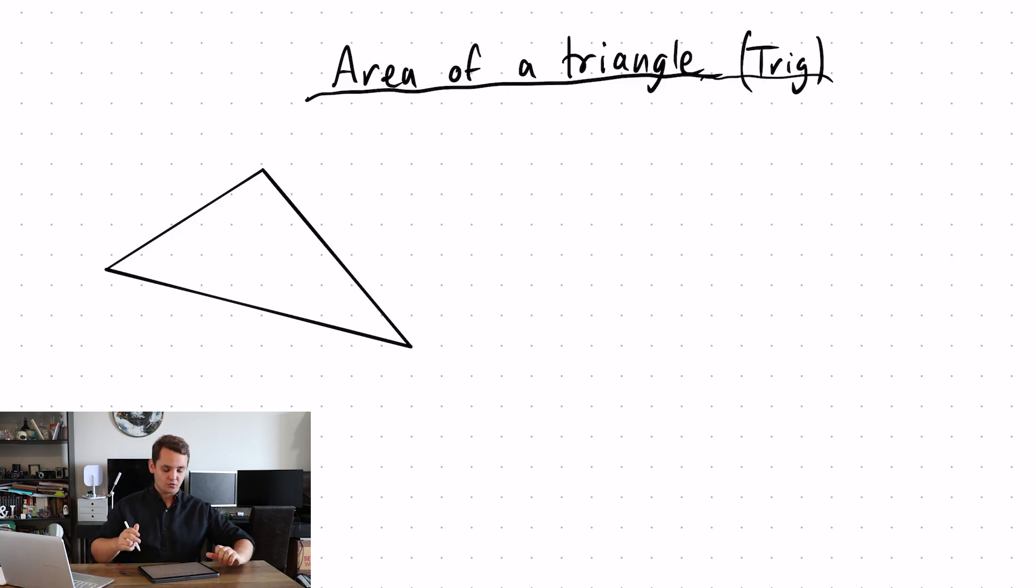So this revolves around knowing three pieces of information. We need to know two sides and we need to know the angle between those two sides, labeled as A, B, and capital C.